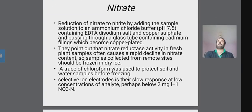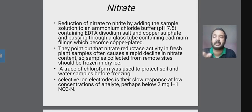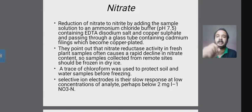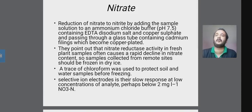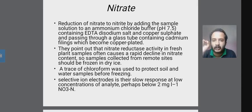Look at this first point on nitrate. The reduction of nitrate to nitrite is done by adding the sample solution to ammonium chloride buffer, with a pH range of about 5 to 7.5. The buffer contains EDTA disodium salt and copper sulfate.